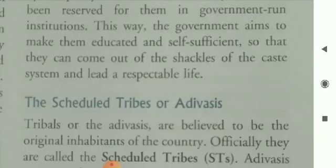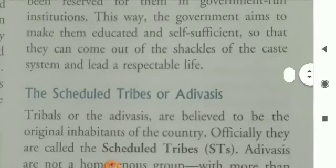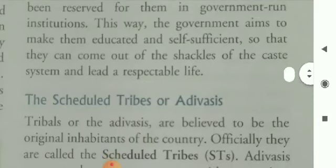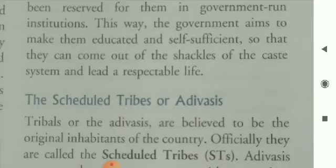That is why, when India became independent and the constitution was framed, special provisions were mentioned for them in the constitution. It was thought by the politicians and constitution framers that by giving them special rights and special rebates in the fields of society, economy, employment, and social status, they should be provided so that they could also become an essential part of society and enjoy their status at a high level.